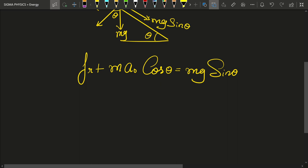And that would imply that the frictional force on the block is equal to m g sin theta minus m a0 cos theta.